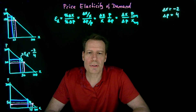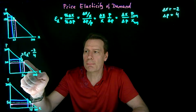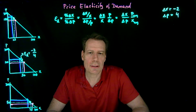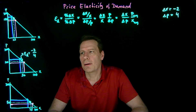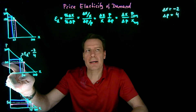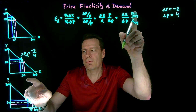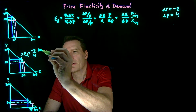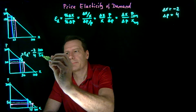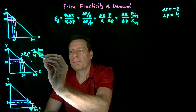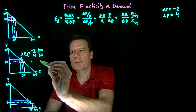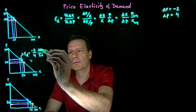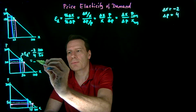Some textbooks call this the midpoint formula — we're using the midpoint, the point in between the two points used to calculate the changes. That means we're going to plug in 100 for P and 50 for x, giving us 100 divided by 50. So minus 2 times 100 is minus 200, and 4 times 50 is 200, so we're dividing minus 200 by 200 to get minus 1.